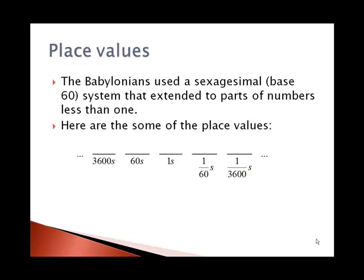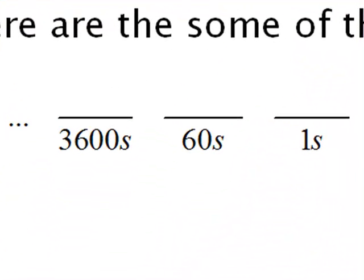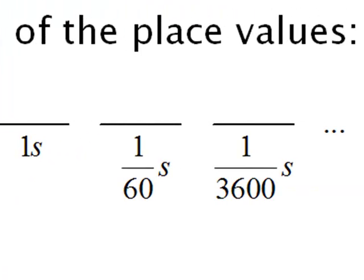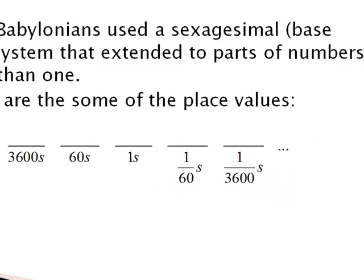In addition to having whole number place values of 1s, 60s, 60 squared or 3600s, we also had parts less than 1: 60ths, 3600ths, and the next place value would be 1 over 60 to the third power.